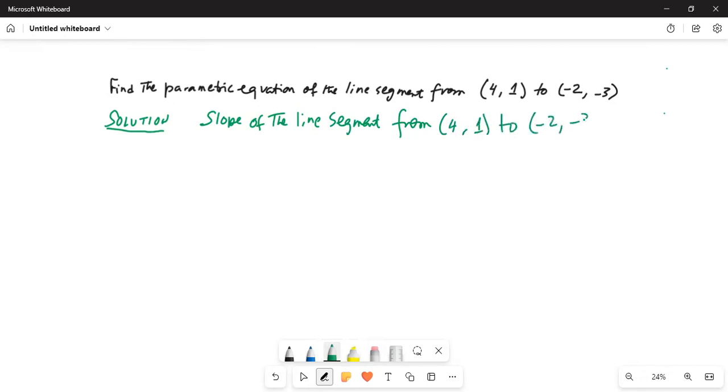So m is equal to— sorry, my mistake— m equal to y2 minus y1 divided by x2 minus x1.